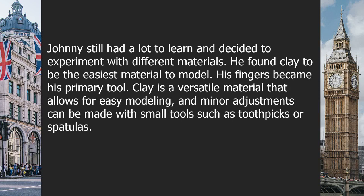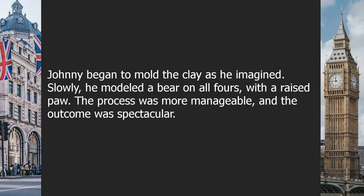Johnny still had a lot to learn and decided to experiment with different materials. He found clay to be the easiest material to model, and his fingers became his primary tool. Clay is a versatile material that allows for easy modeling, and minor adjustments can be made with small tools such as toothpicks or spatulas. Johnny began to mold the clay as he imagined, and slowly modeled a bear on all fours with a raised paw. The process was more manageable, and the outcome was spectacular. He was ecstatic.